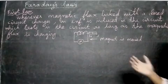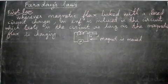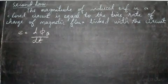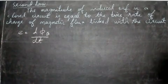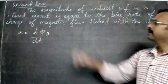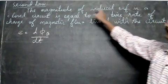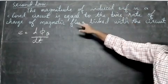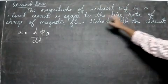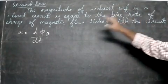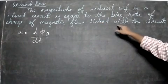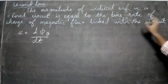Now let us study the second law. The magnitude of the induced EMF in a closed circuit is equal to the time rate of change of magnetic flux linked with the circuit.